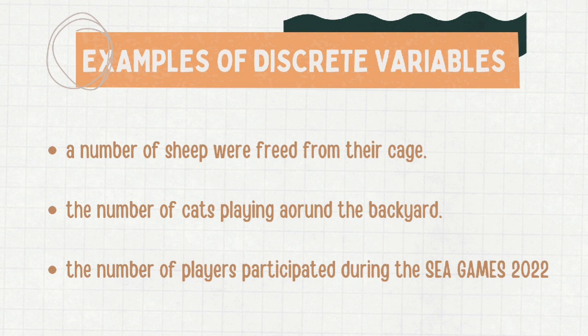A number of sheep freed from their cage. The keyword here is the word 'number,' because in discrete variables, data can be counted — the sheep can be counted. Then, the number of cats playing around the backyard, and lastly, the number of players who participated during the SEA Games 2022.